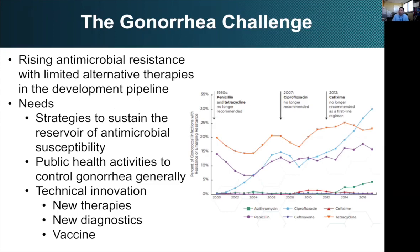Antimicrobial-resistant gonorrhea is a major problem. We have rising rates of resistance with very limited alternatives in development. You can see the trends over time in resistance, with a recent big bump in azithromycin resistance in the United States — azithromycin has long been part of our standard regimen. We need strategies to sustain the reservoir of antimicrobial susceptibility, public health activities to control gonorrhea more generally, and real technical innovation: new drugs, new diagnostics, and ideally a vaccine.